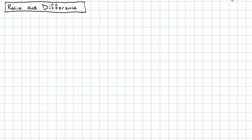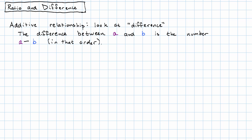If we want to describe an additive relationship, we look at the difference. The difference between a and b is just a minus b, in that order. It means that the number a is what we get if we take b plus the difference.